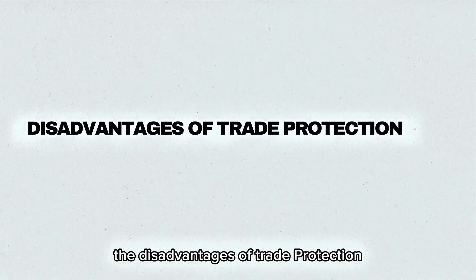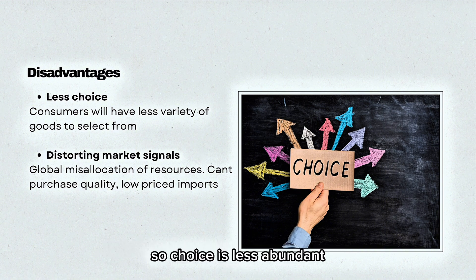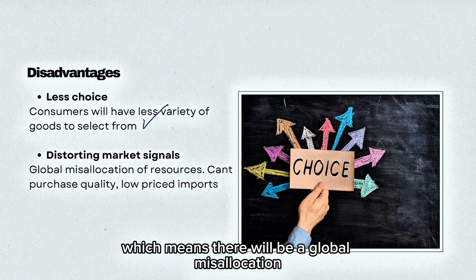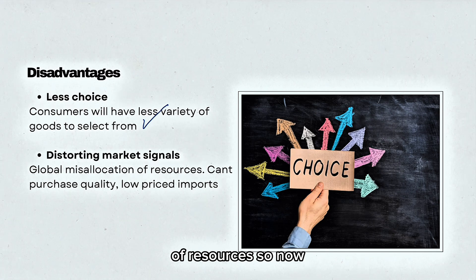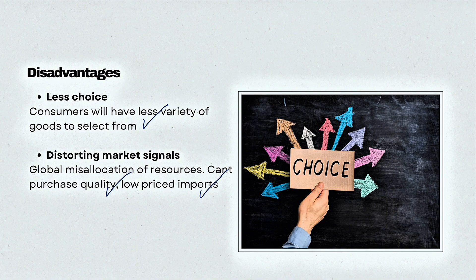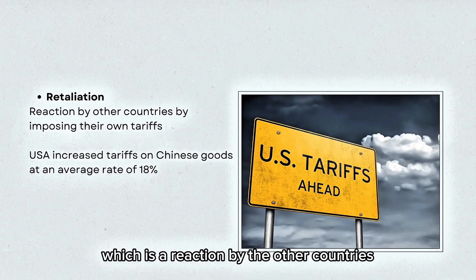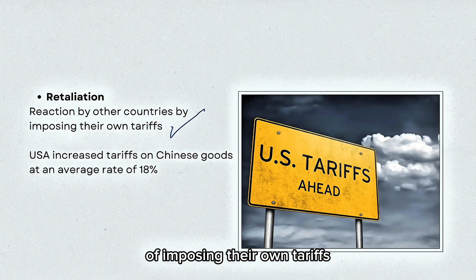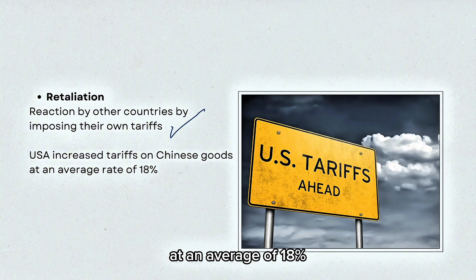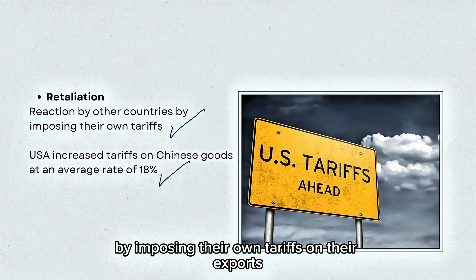The disadvantages of trade protection are that consumers will have less choice, with fewer imports available. Trade protection also distorts market signals, leading to a global misallocation of resources, meaning consumers cannot purchase high-quality, low-priced imports. The last disadvantage is the potential for retaliation — other countries may impose their own tariffs in response. For instance, the USA increased tariffs on Chinese goods by an average of 18%, and China has been countering with its own tariffs on exports.